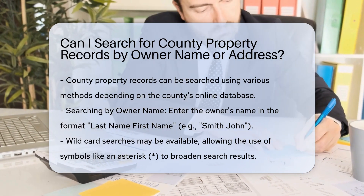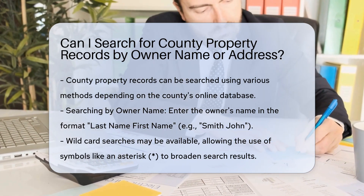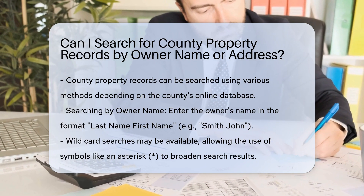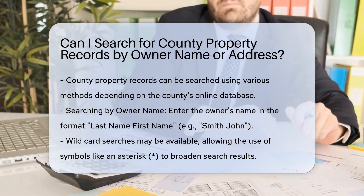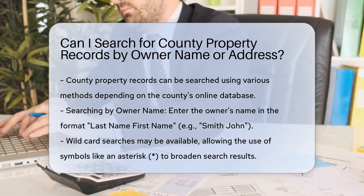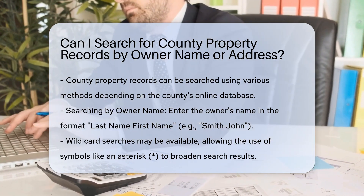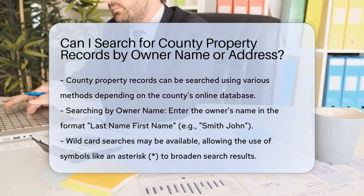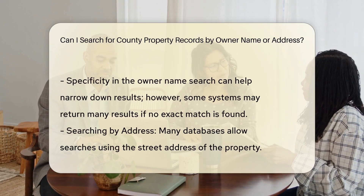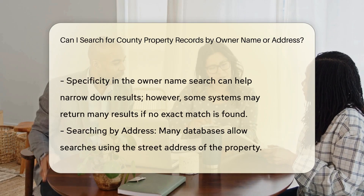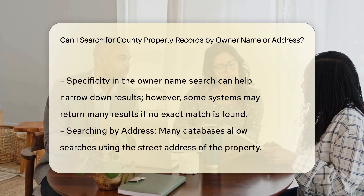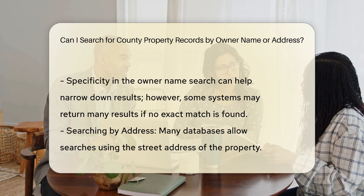Searching by owner name. In many counties, you need to enter the owner's name in the format last name, first name, without using commas or quotes. For instance, if the owner's name is John Smith, you would enter Smith John.